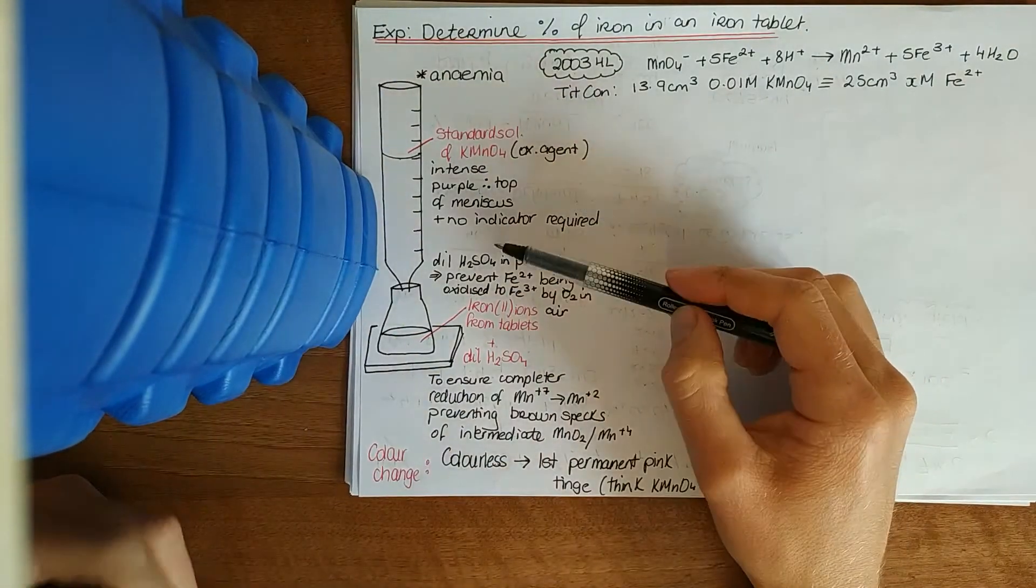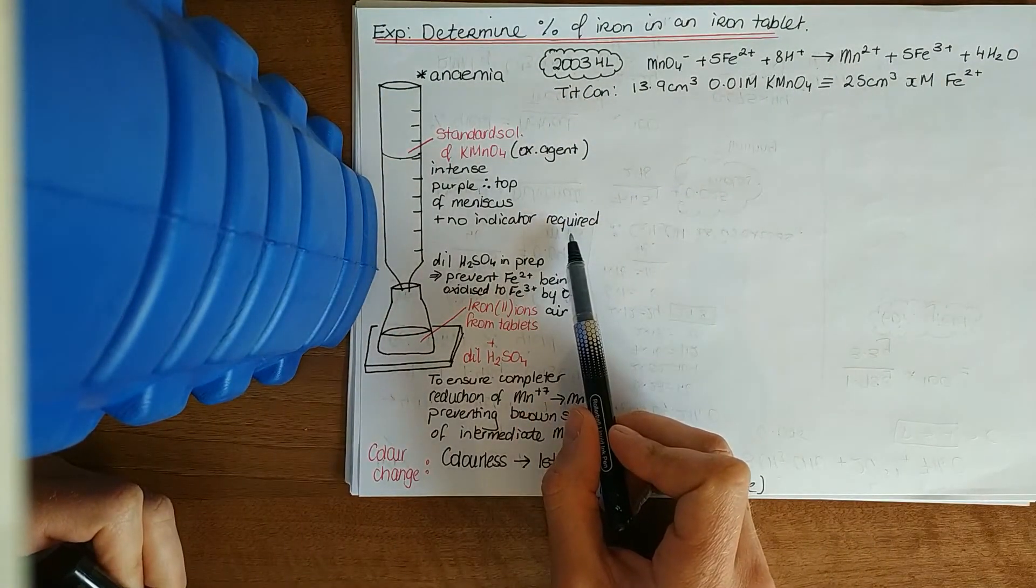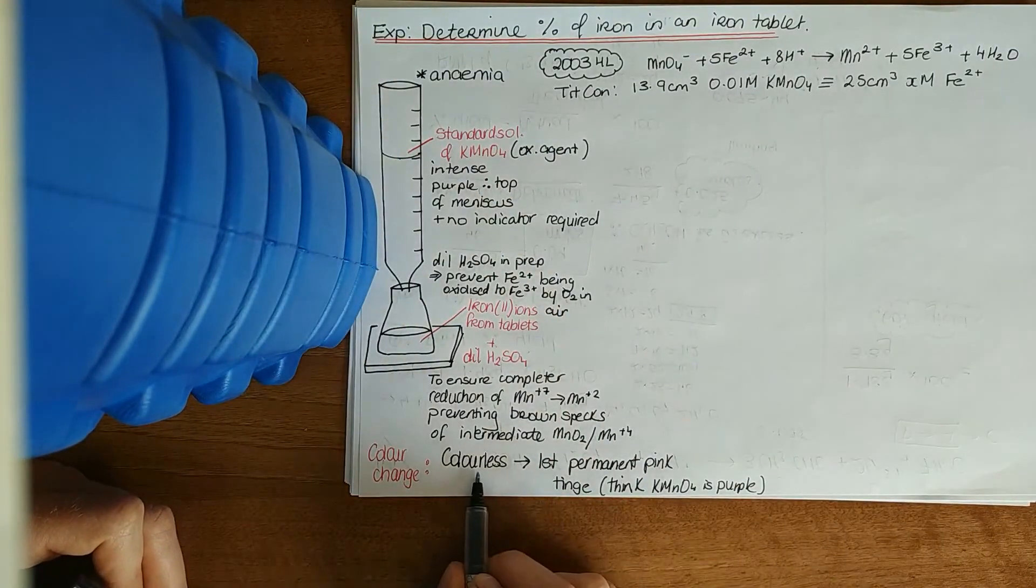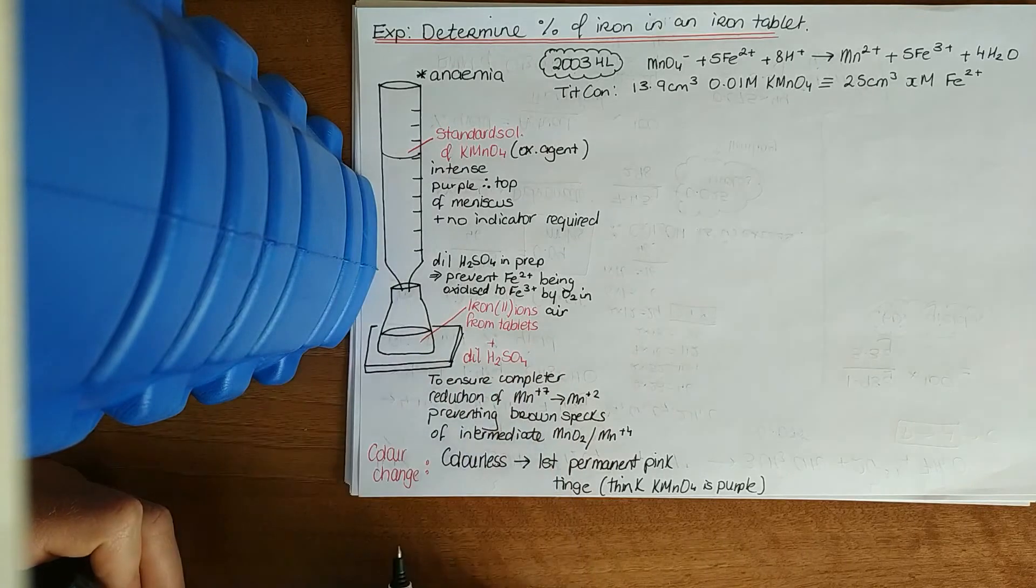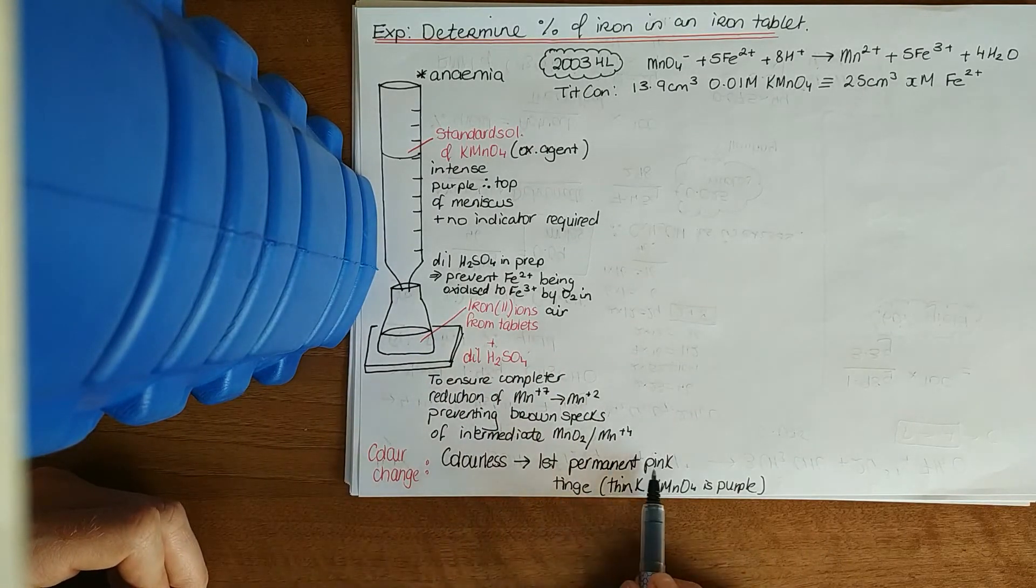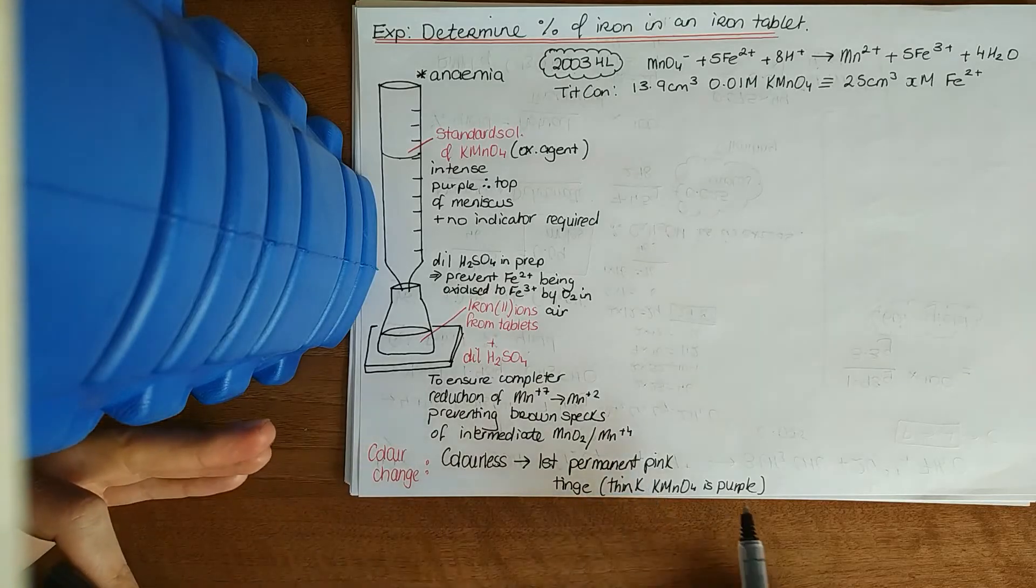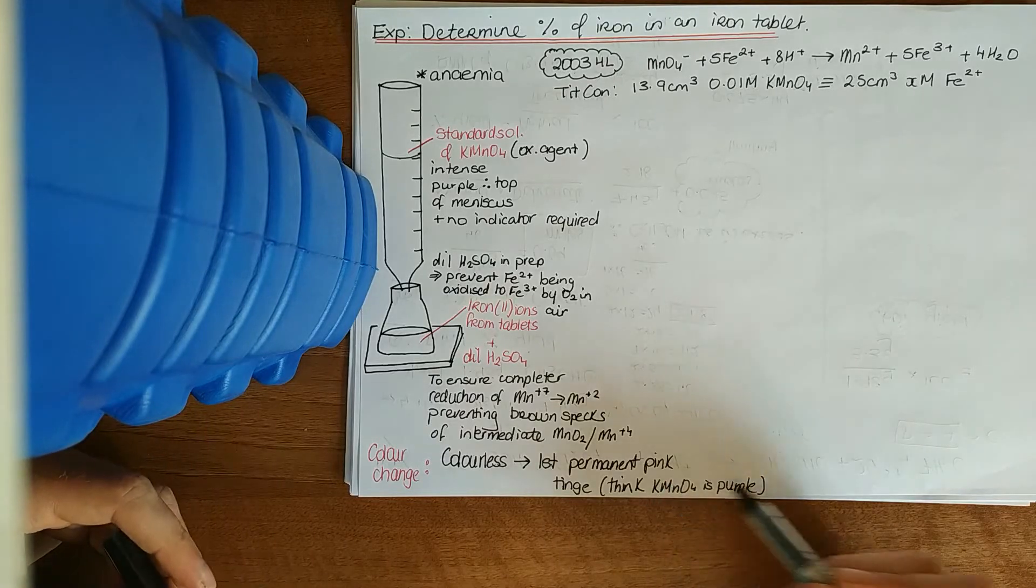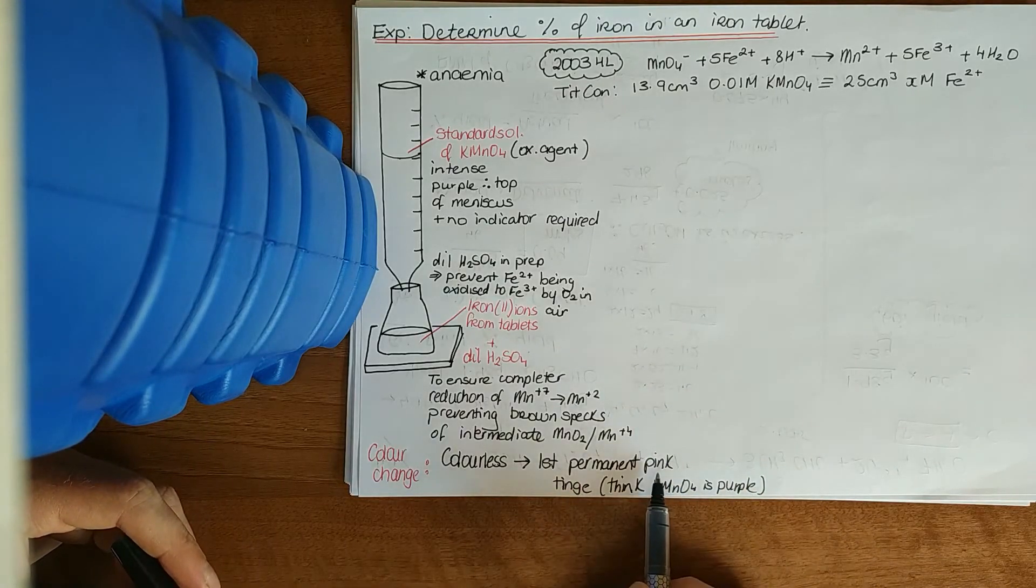As it's got a color, there's no indicator required. We see the color change goes from colorless in our conical flask to the first permanent pink tinge. That makes sense, because you're adding in a purple solution, so obviously it's going to have some tinge of purple, the first permanent pink tinge.